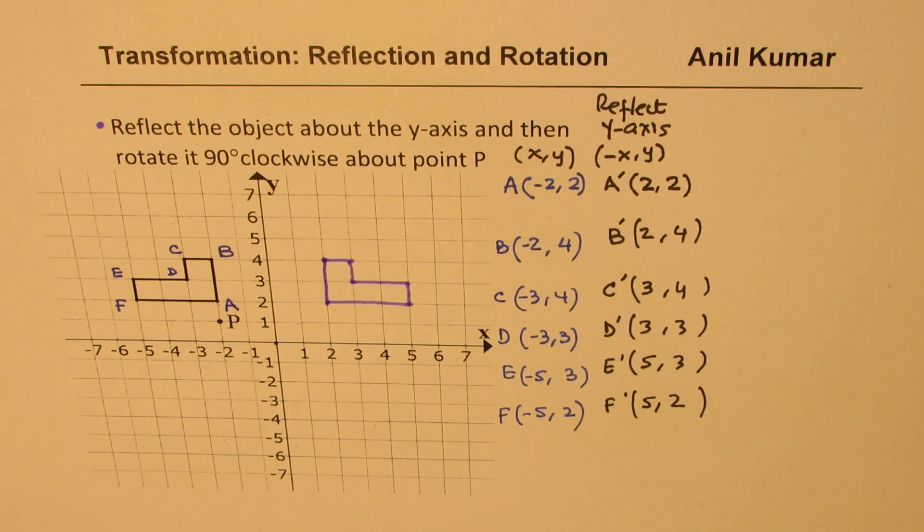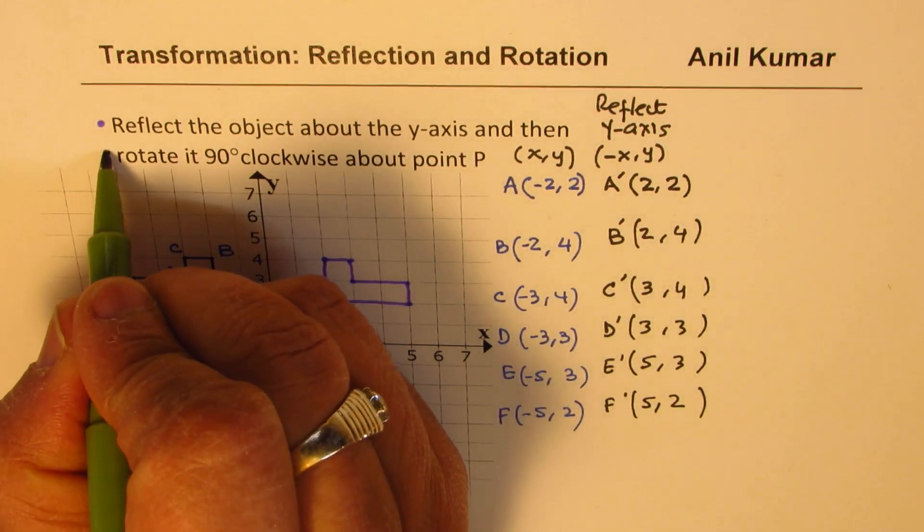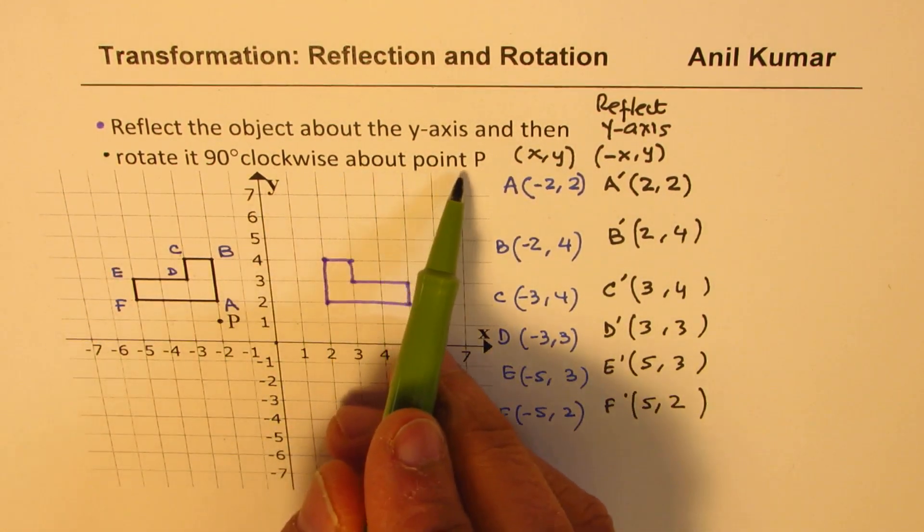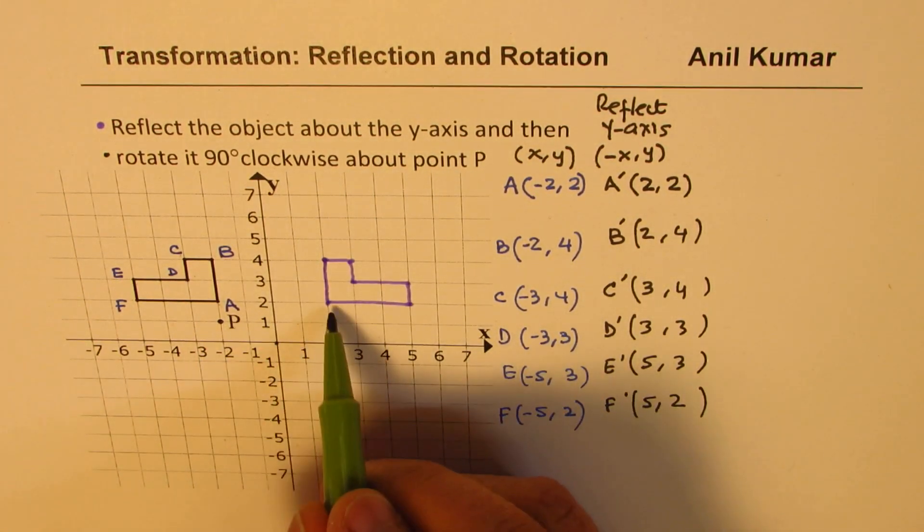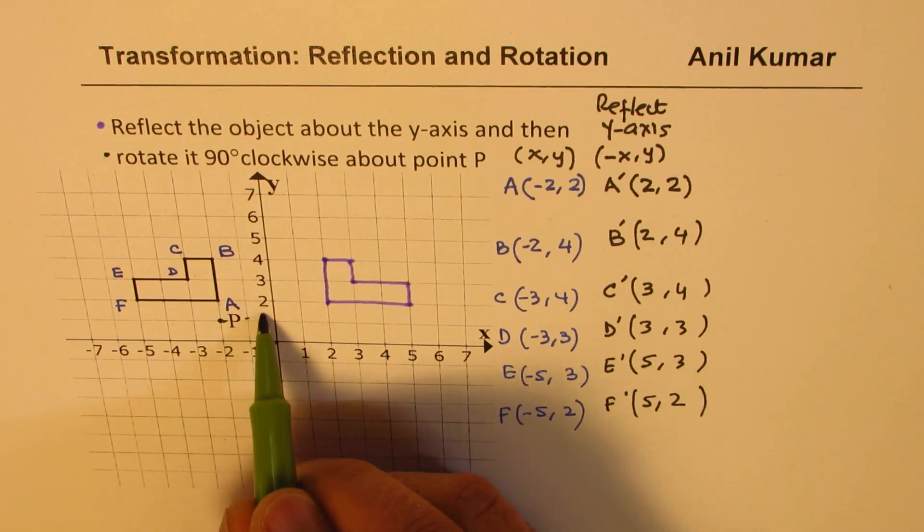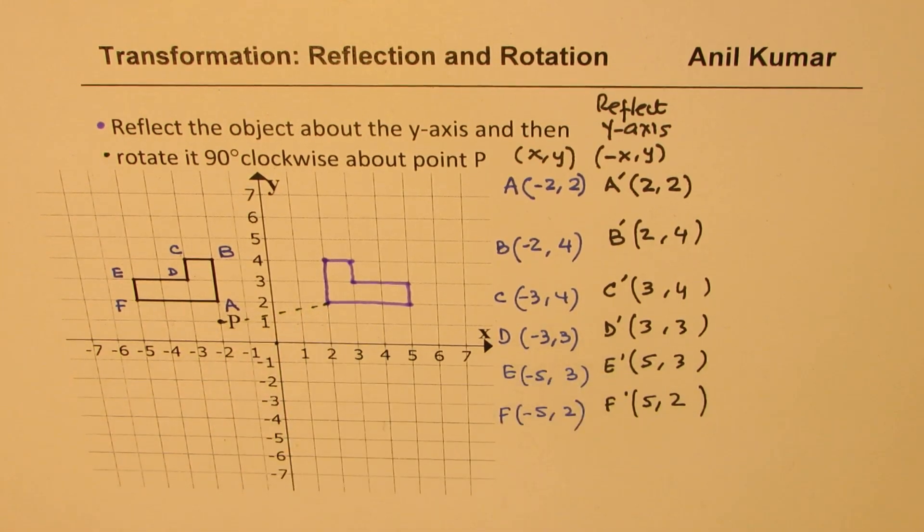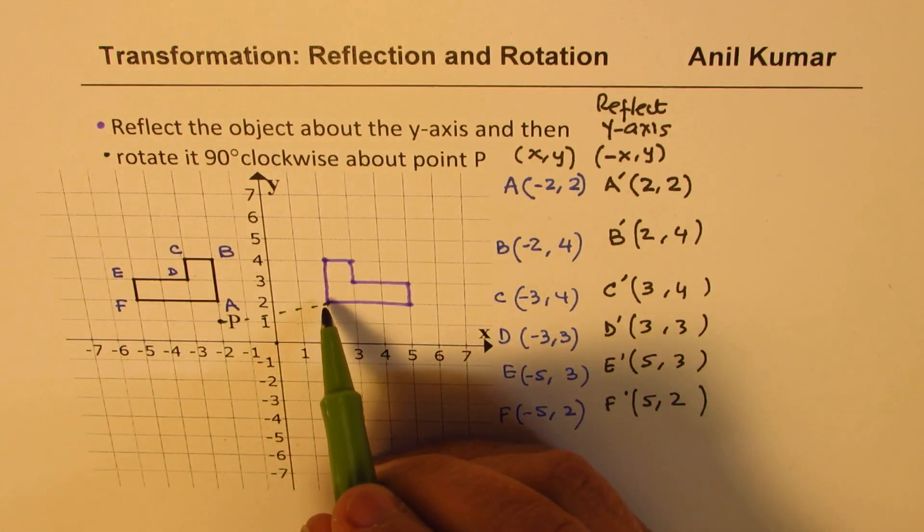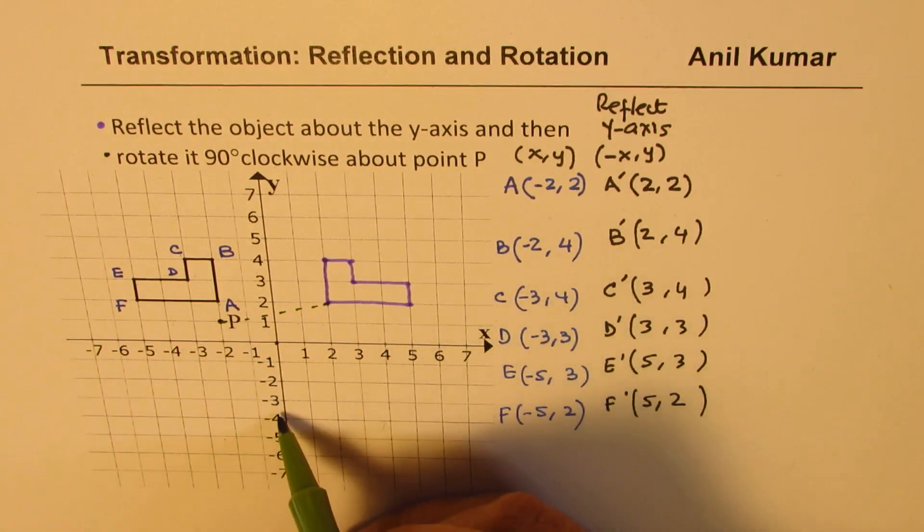So you don't really need to trace and then do reflection. What you can see here is a mirror image, same distance away, and coordinate points, as you can clearly see, changes for x but not for y when we are reflecting on the y-axis. Now we are going to address a very difficult issue, and that is how do we rotate it 90 degrees clockwise about the point P. About this point, we have to rotate. We have to rotate this to 90 degrees. So it will come somewhere there.